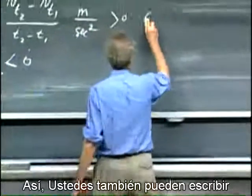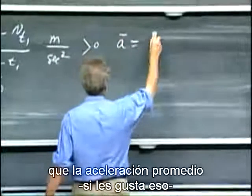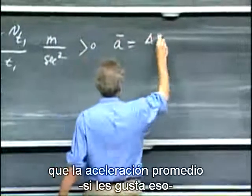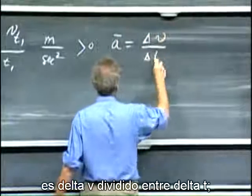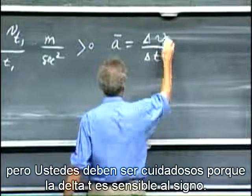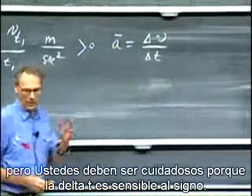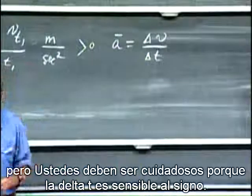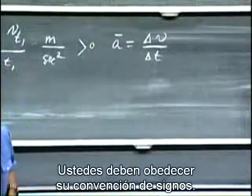You can also write that average acceleration as delta v divided by delta t, but you must be careful because delta v is sign-sensitive. You must obey your sign convention.